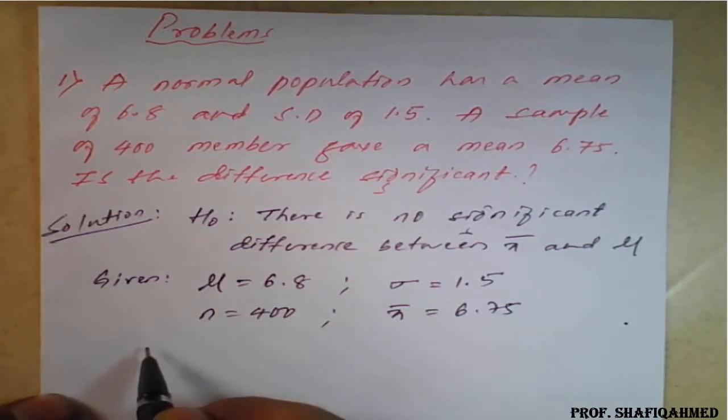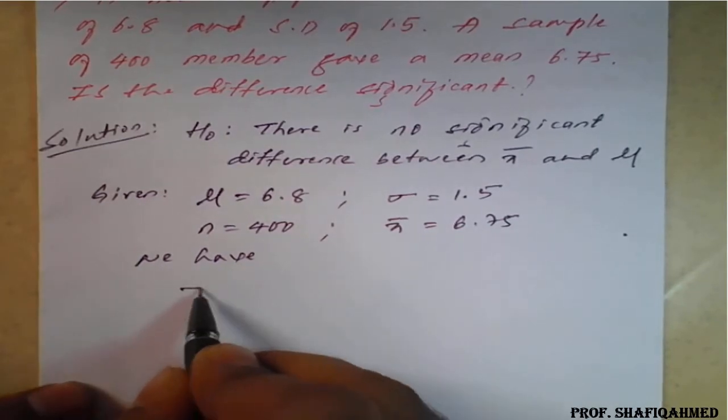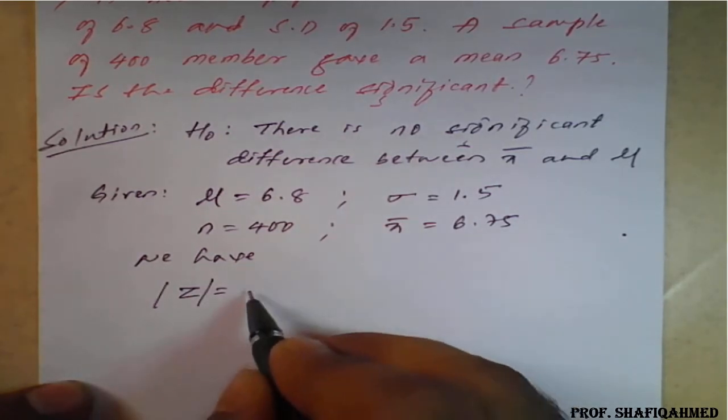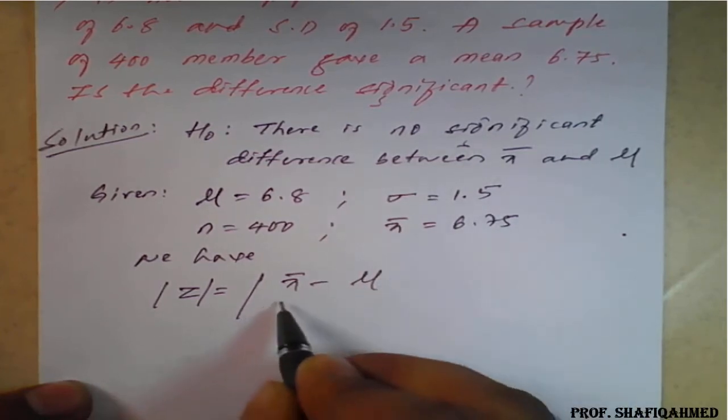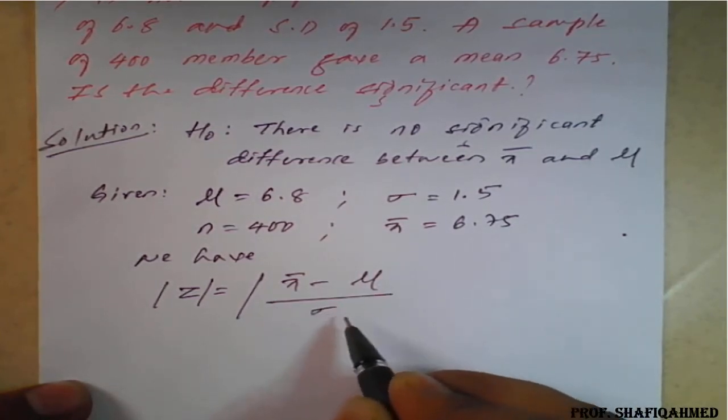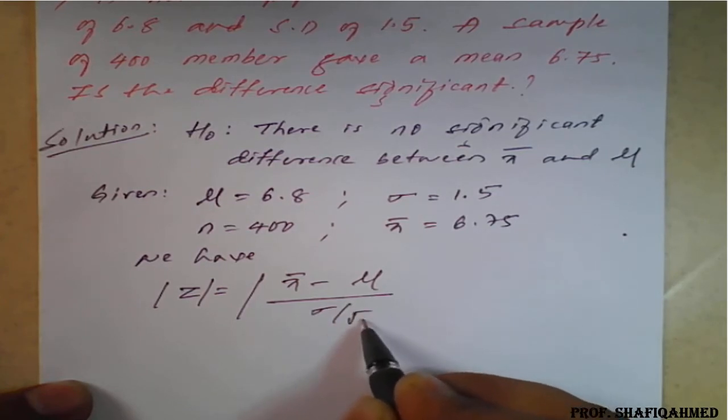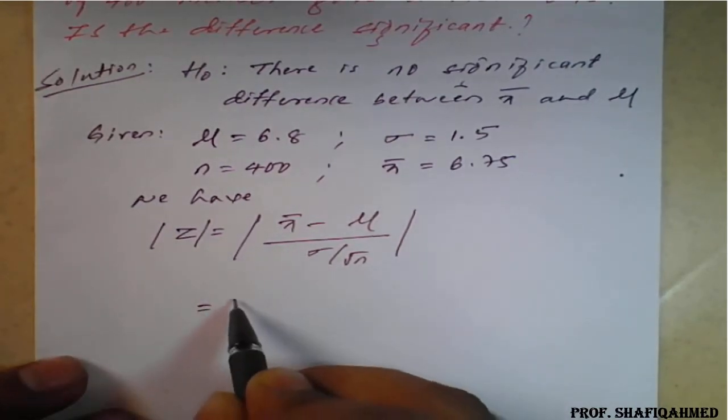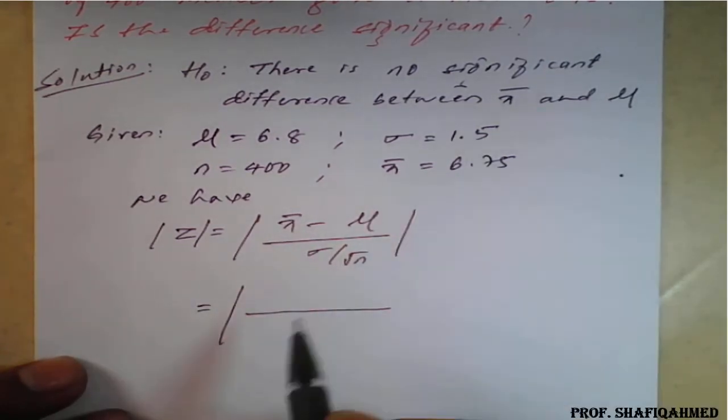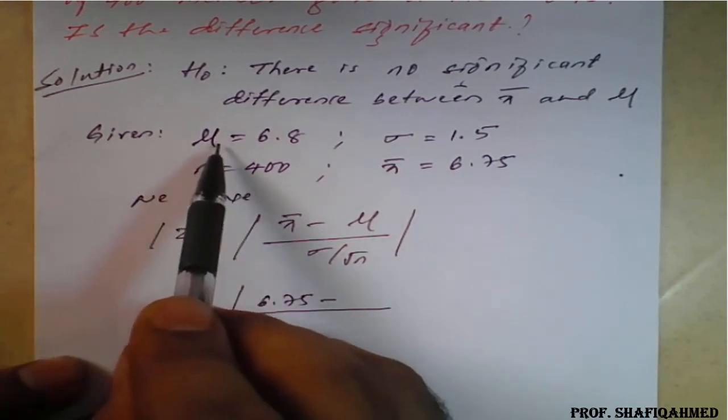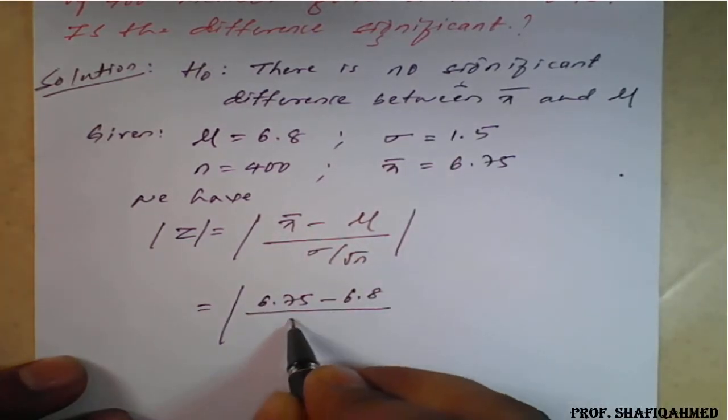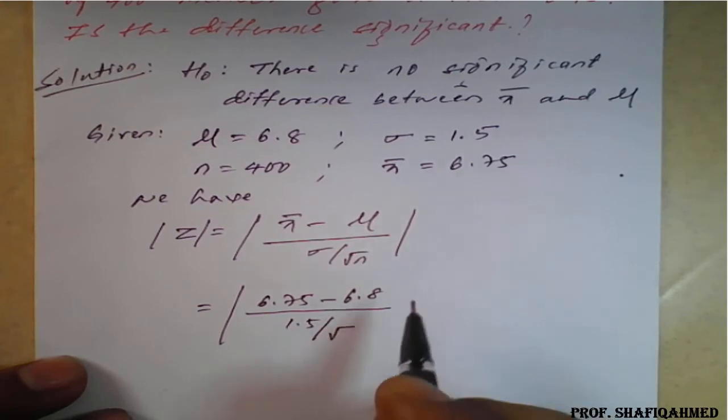We have z equals, I will take modulus of that, z equals modulus of x̄ minus μ divided by standard deviation divided by root n. This is the formula. Simply apply the values. Here, x̄ value is 6.75 minus μ value is 6.8 divided by standard deviation value is 1.5 divided by root of n, n is 400.